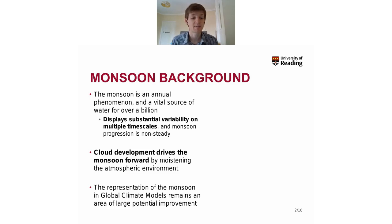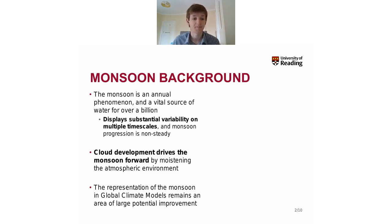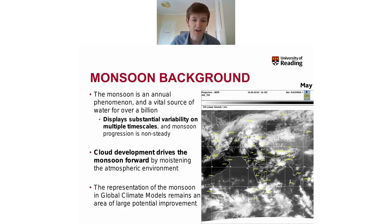The representation of the monsoon in global climate models remains an area of large potential improvement. There's only really meaningful skill out to three days at the moment, whereas ideally you'd want five days or more. I'm going to show a quick satellite image from each month to illustrate the monsoon progressing from southeast to northwest and back again.